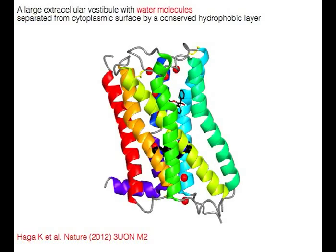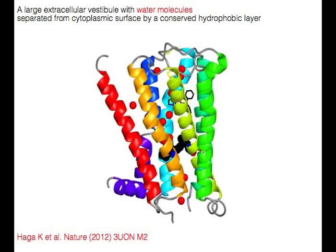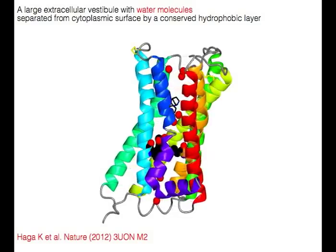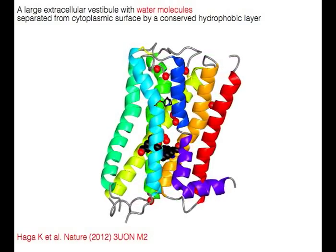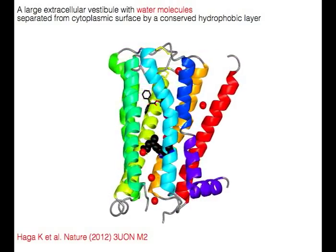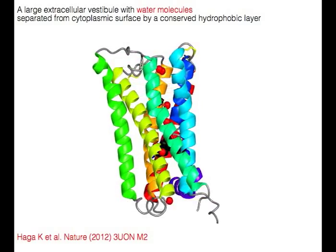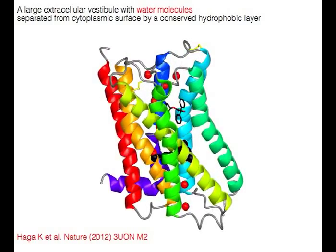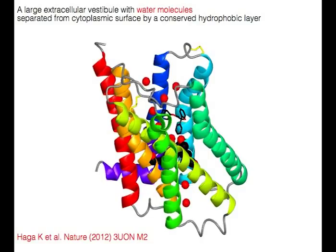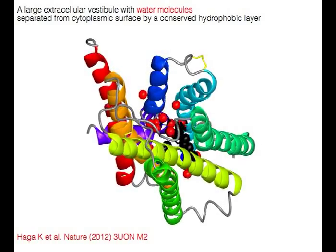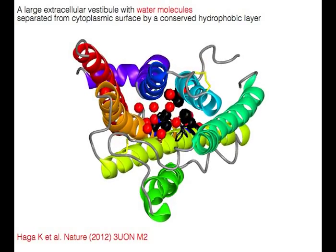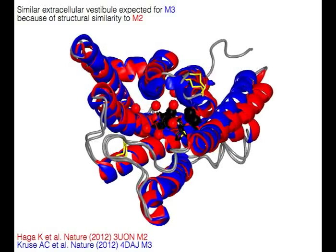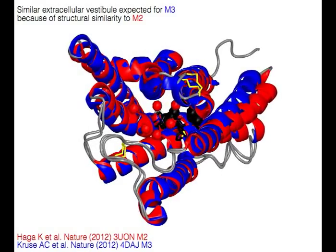There is a large extracellular vestibule with water molecules. The vestibule is separated from the cytoplasmic surface by a conserved hydrophobic layer. A similar extracellular vestibule is expected for M3 because of its structural similarity to M2.